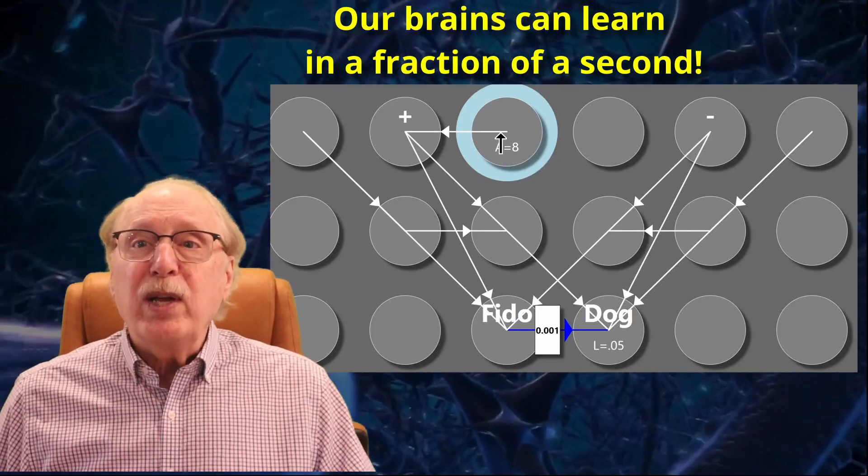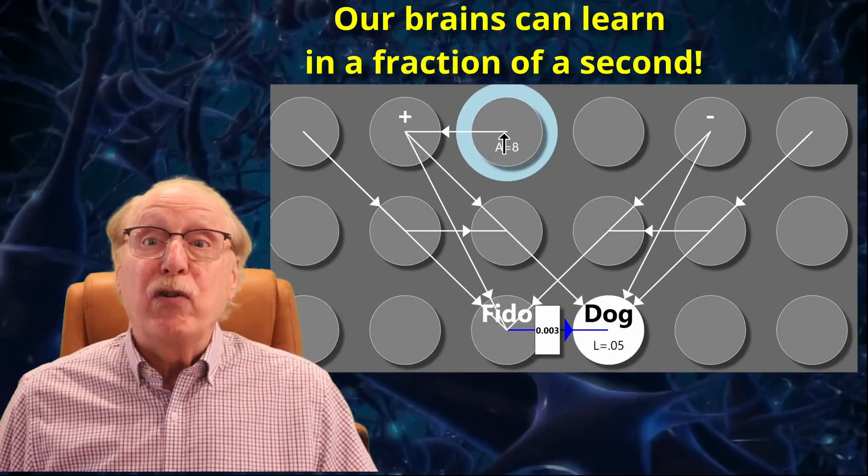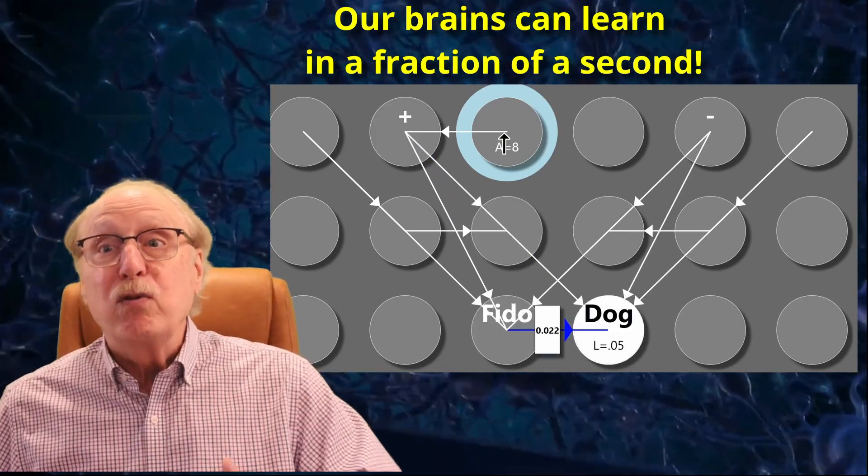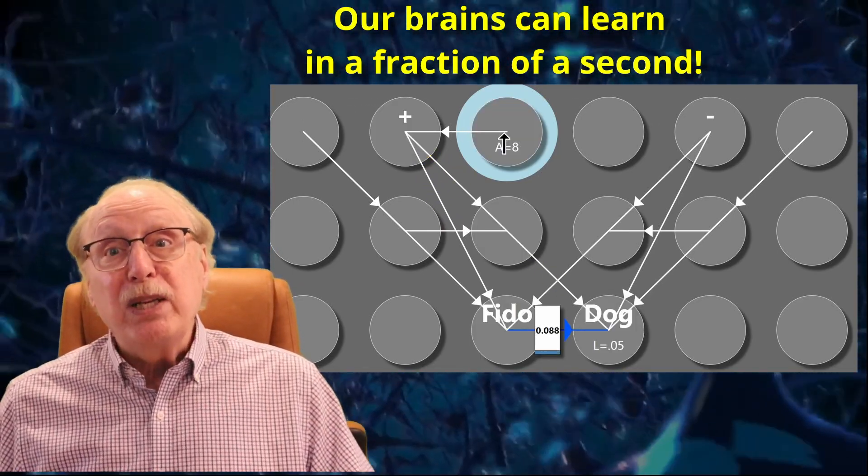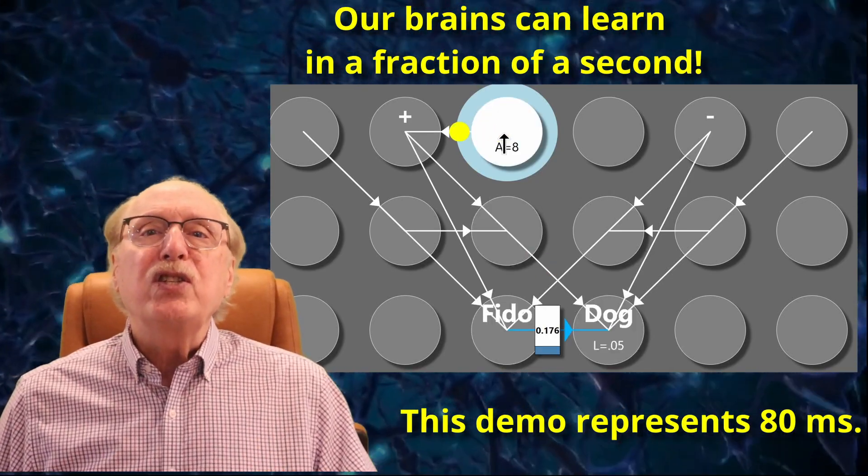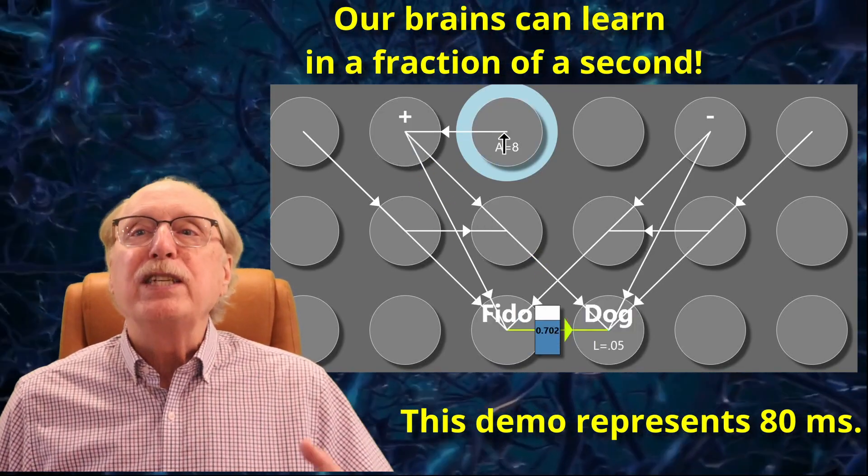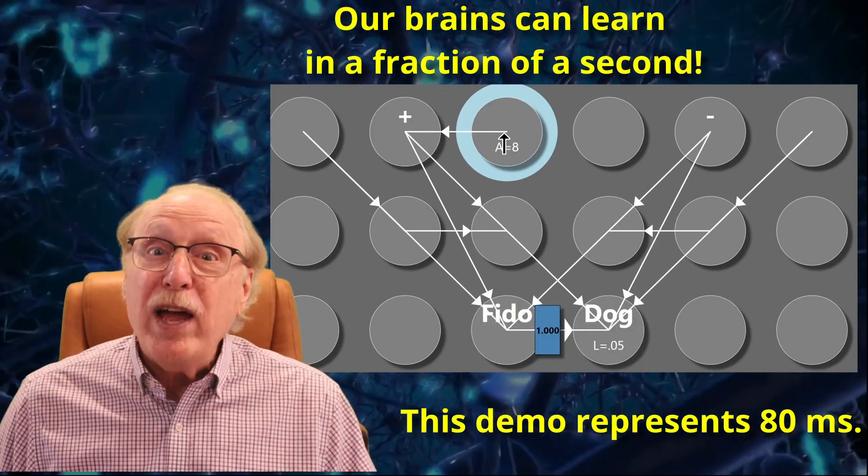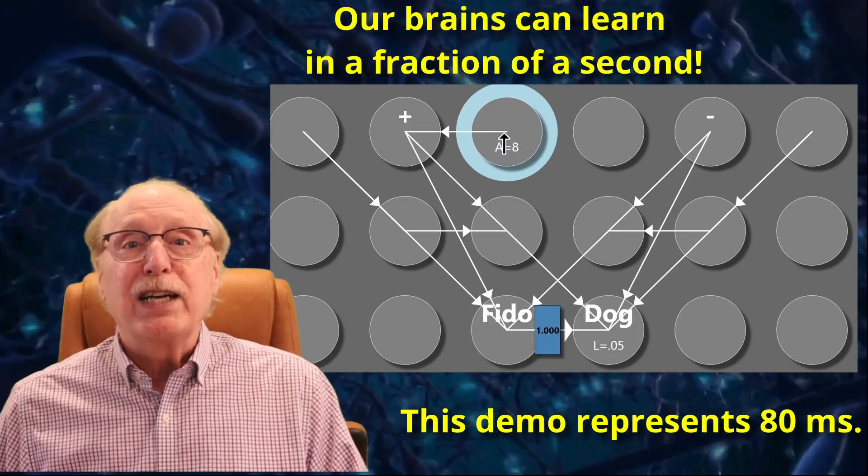In the optimal case, with both neurons firing bursts, one could expect to set a synapse weight from near zero to near one in perhaps 100 milliseconds. This is consistent with our observation that if I tell you that FIDO is a dog, you can begin to recall that fact and make use of it in a fraction of a second.